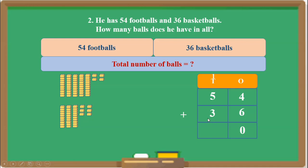Now we add the 10's: 5 plus 3 is 8, plus the 1 we carried over gives 9. So the answer is 90 — or 9 tens and 0 ones. We added 54 and 36: first we added the 1's (4 plus 6 = 10), carried the 1 to the 10's place, then added the 10's to get 90.